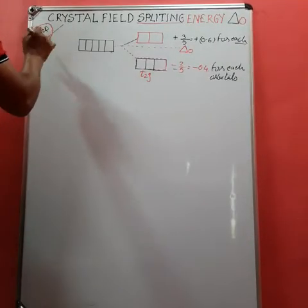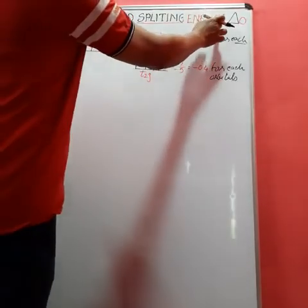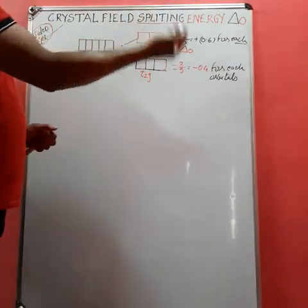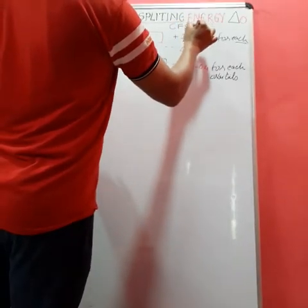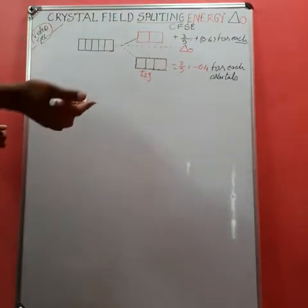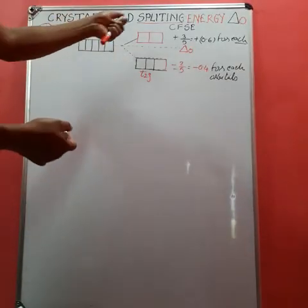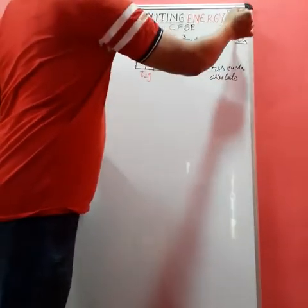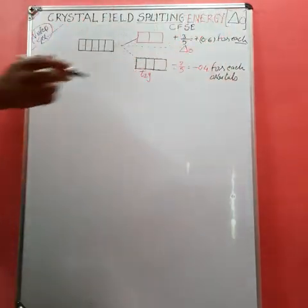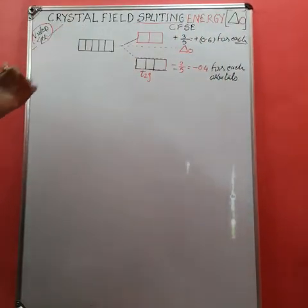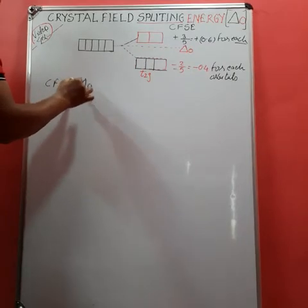This is video number four about crystal field splitting energy, also known as crystal field stabilizing energy, abbreviated as CFSE. For octahedral complexes, it is denoted by delta-oh, where 'oh' stands for octahedral. Crystal field splitting energy is the difference between the energy of the two sets of orbitals.